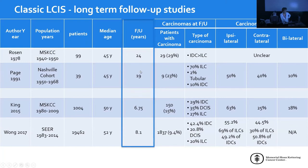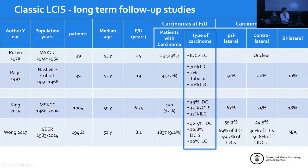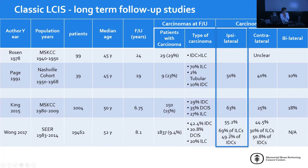Follow-up studies with long follow-up of 19 to 24 years show carcinomas developed in all series, with the rate higher in older series due to longer follow-up. In more recent series, 10 to 15% of patients developed carcinoma. Most carcinomas were invasive lobular, and current data shows either equal frequency of invasive ductal and lobular or a higher incidence of invasive lobular on the ipsilateral side — supporting the notion that classic lobular neoplasia is a precursor lesion.